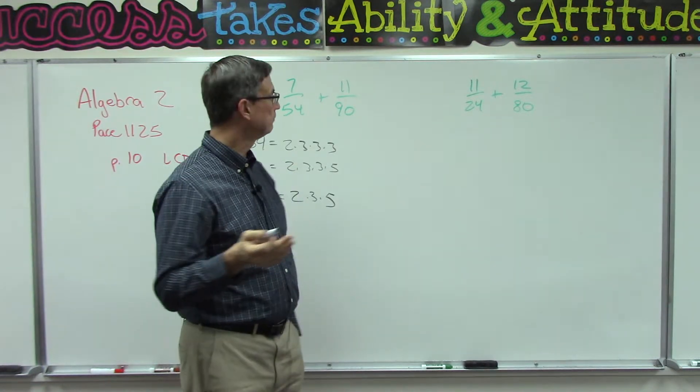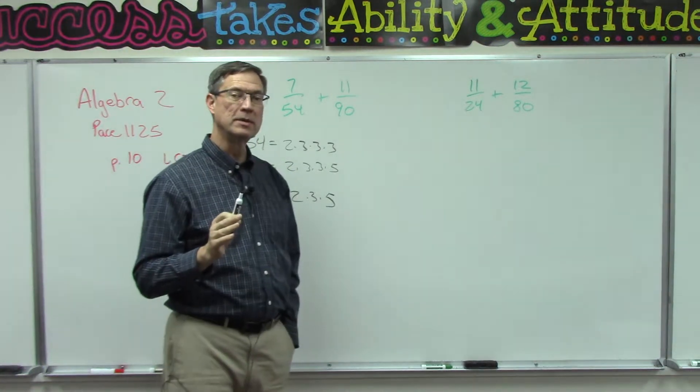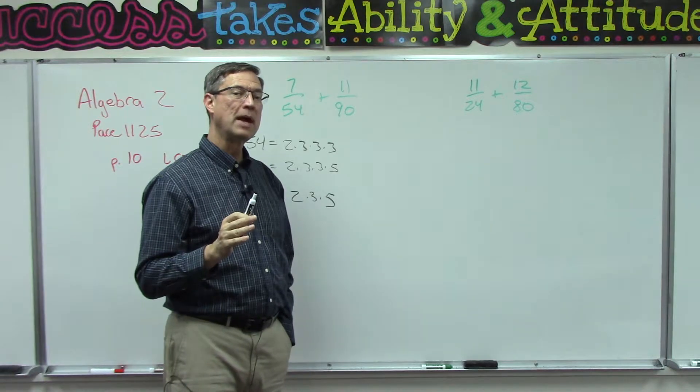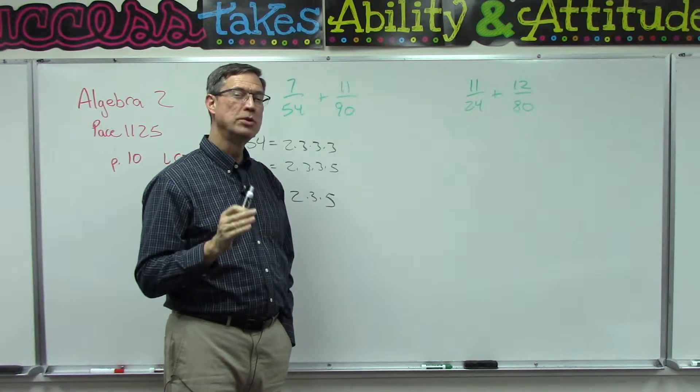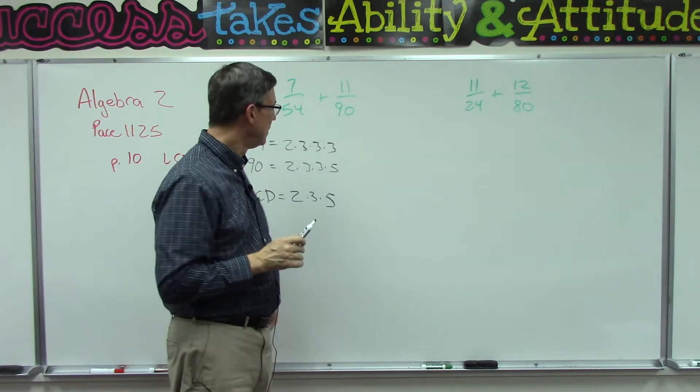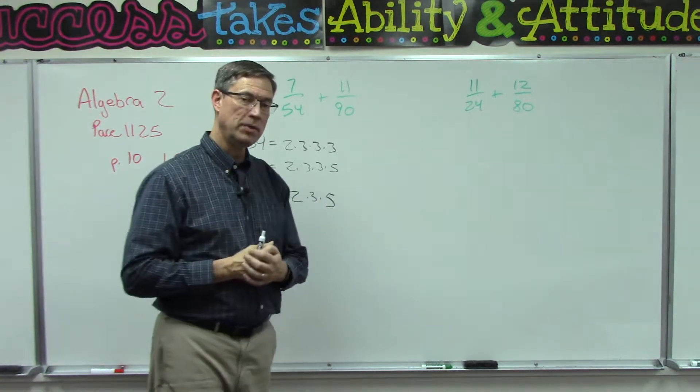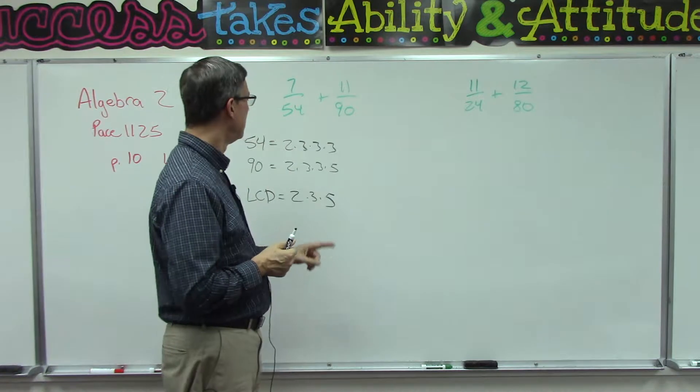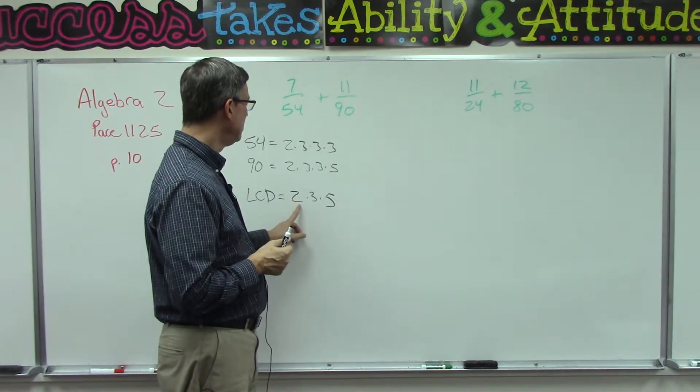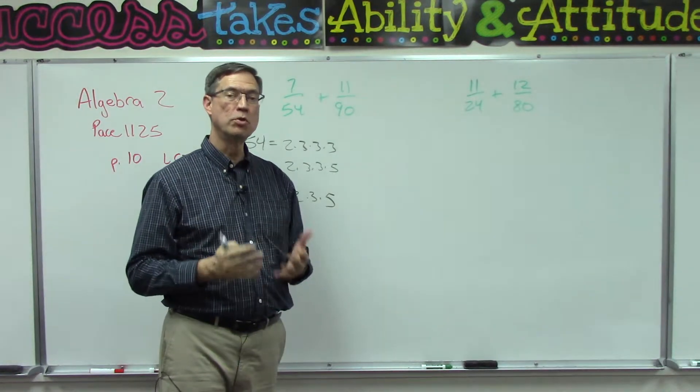Notice neither one of them had 7, so I'm not including 7 in the LCD. Now here's the other key, ready? This is the second rule: I go back and I figure out what is the most number of times that each of these numbers is used in any one of these.